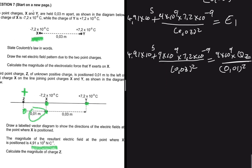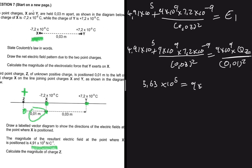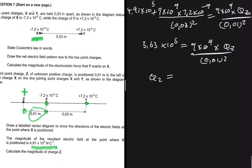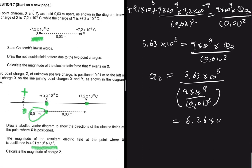On the left-hand side we get 5.63 × 10⁵, which equals (9 × 10⁹ × q_z) / (0.01)². Therefore, the charge of z equals (5.63 × 10⁵) divided by (9 × 10⁹ / (0.01)²), and ultimately we get 6.26 × 10⁻⁸ coulombs.